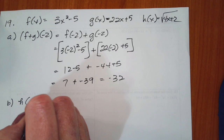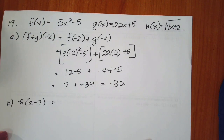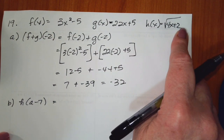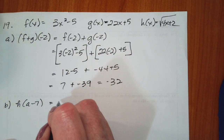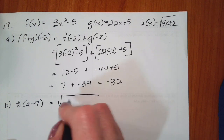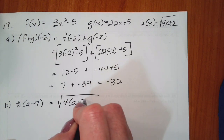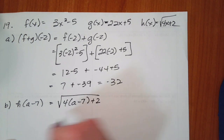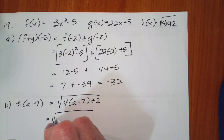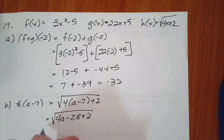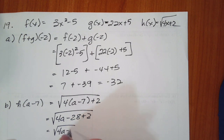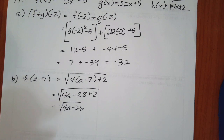Part b is h of a minus 7. That means I take the h function, and wherever I see an x, I replace it with a minus 7, and then I simplify. So that becomes the square root of 4 times a minus 7 plus 2, which gives me the square root of 4a minus 28 plus 2, which is the square root of 4a minus 26. You could factor out the 2, but it won't lead to anything.